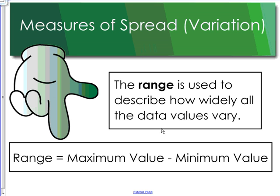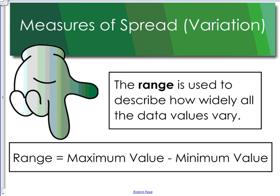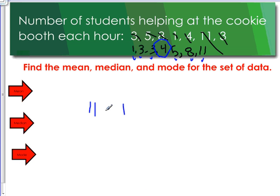So for example, we could go back to this set of data. Our biggest number is 11, so that's our maximum, and our smallest number is 1. By our definition of range, we have to take the maximum value and subtract it from the minimum value, so in this case it would be 11 minus 1. So our range would be 10.